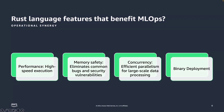In terms of concurrency, Rust's concurrency model is designed for parallelism and multi-threaded performance. These features make it a great choice for high-performance computing, which is what ML Ops is all about. And finally, binary deployment is a huge feature, allowing you to build once and deploy many.